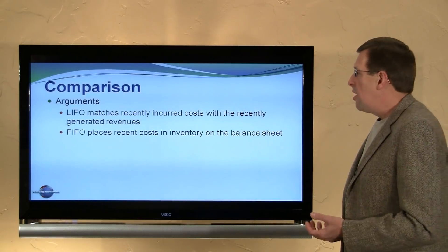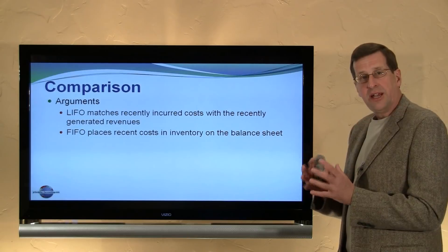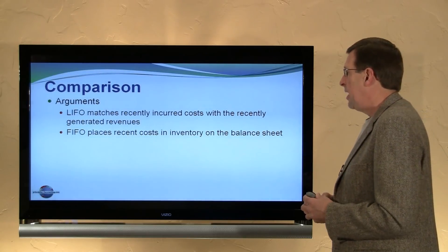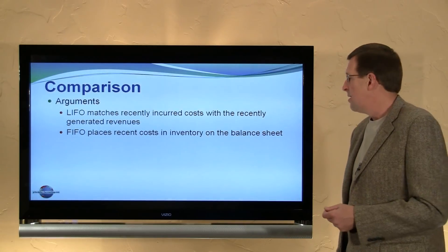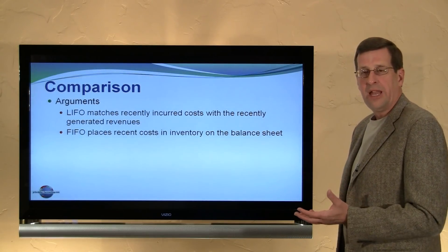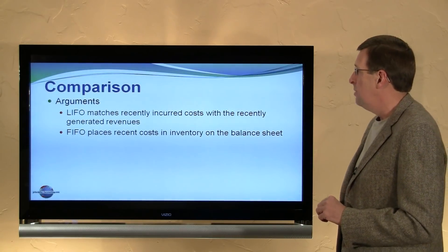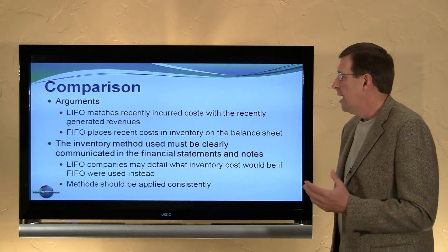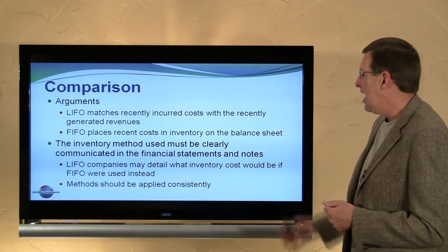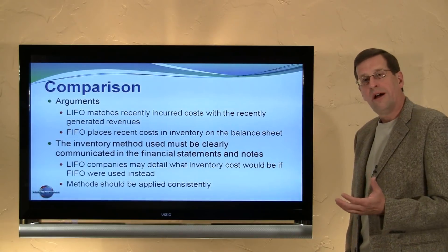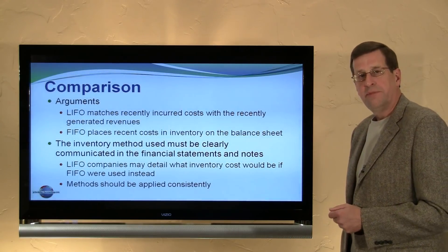There are some conceptual arguments. LIFO matches recent revenues with recent costs, potentially producing a better matching of revenues and expenses and a better determination of income. However, FIFO places those more recent, relevant costs on the balance sheet. The old cheap costs on a LIFO balance sheet may not signal much about the actual worth of the inventory held. Whatever inventory method is used, it must be clearly communicated in the financial statements, and LIFO companies are required to disclose what inventory cost would be if FIFO were used. Whatever method is used, it should be applied consistently.